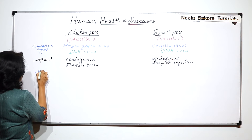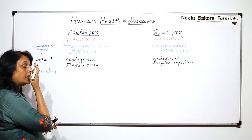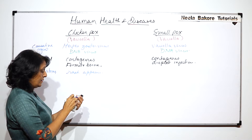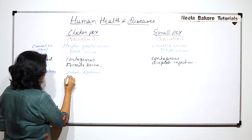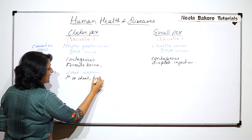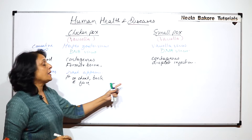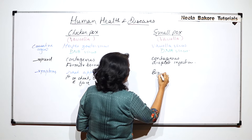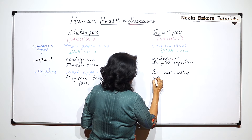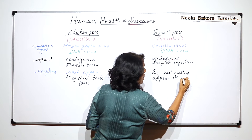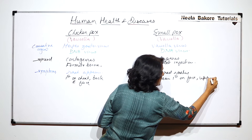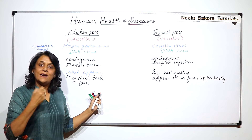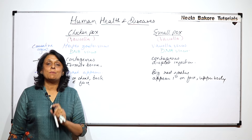Now let us see the symptoms. In case of chickenpox, rashes appear first on the chest, back, and face. In case of smallpox, the rashes are big red rashes that appear first on the face and upper body, and then spread to the rest of the body. In chickenpox, the rashes are comparatively smaller and appear first on the chest and back, then the face.